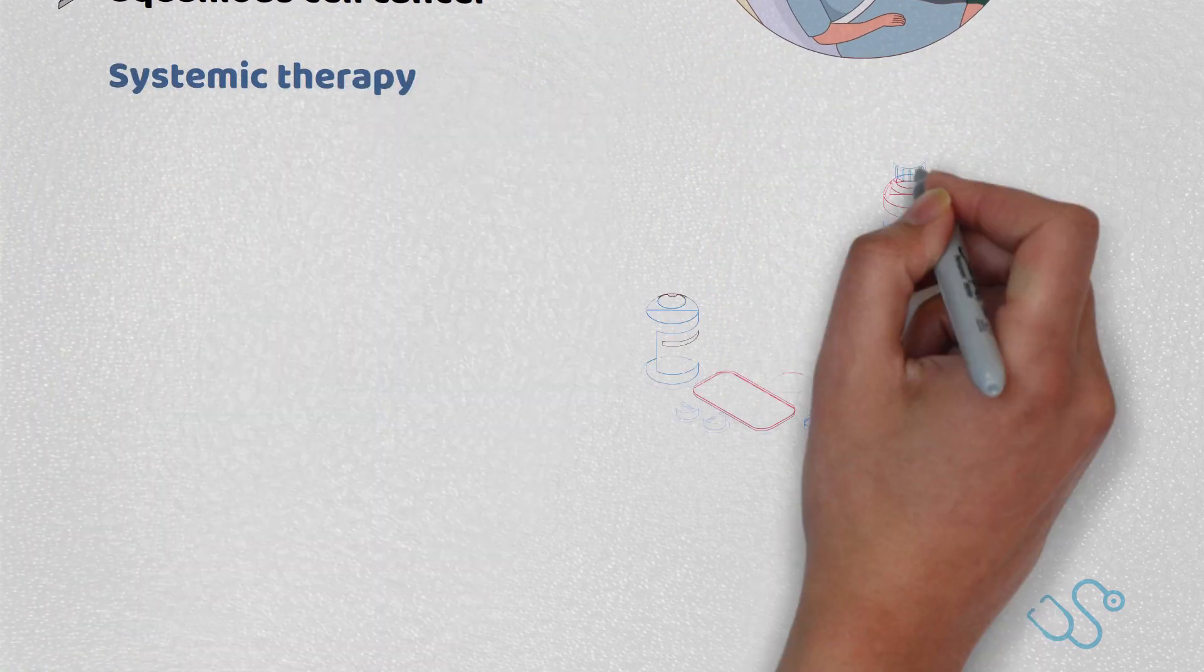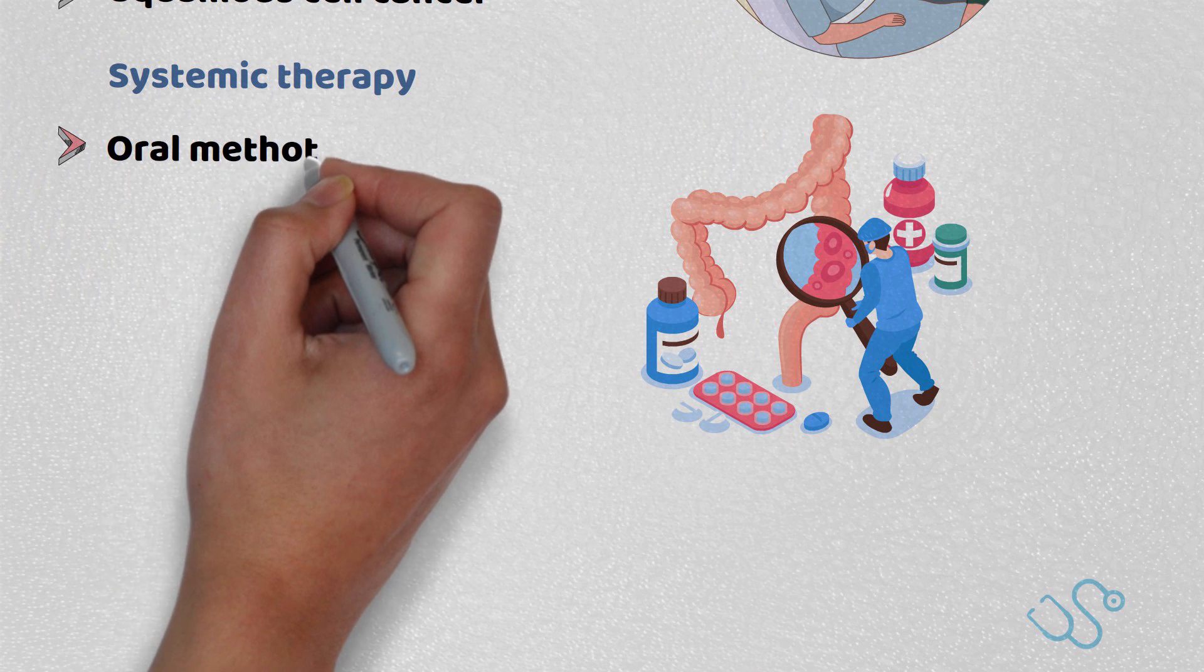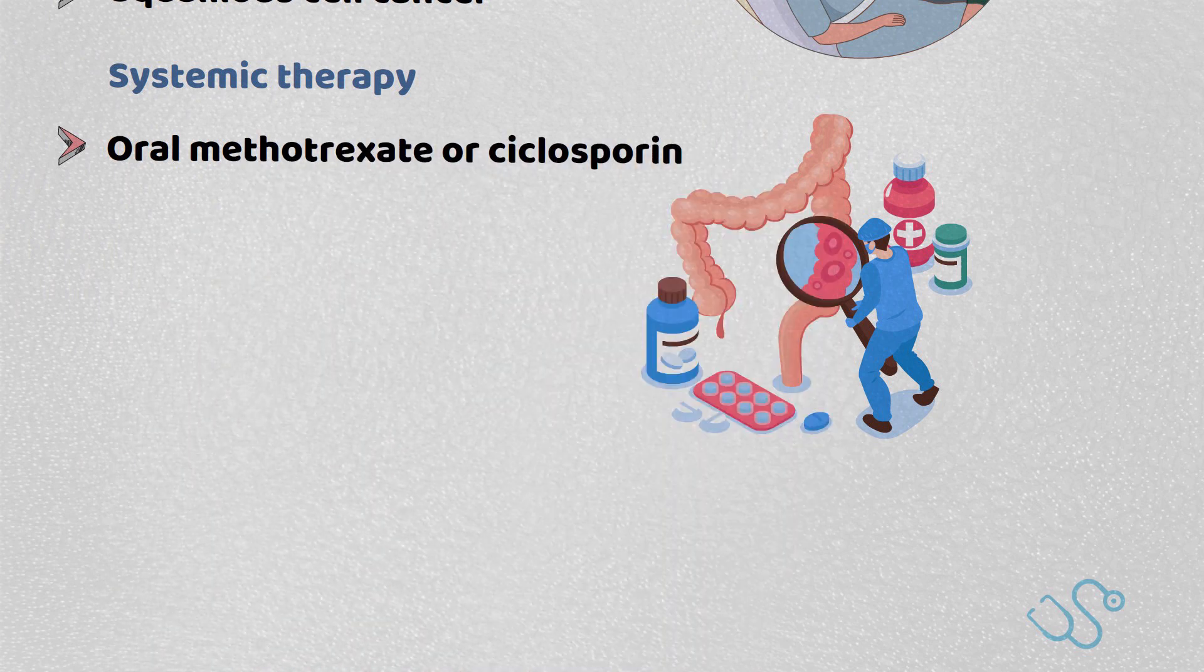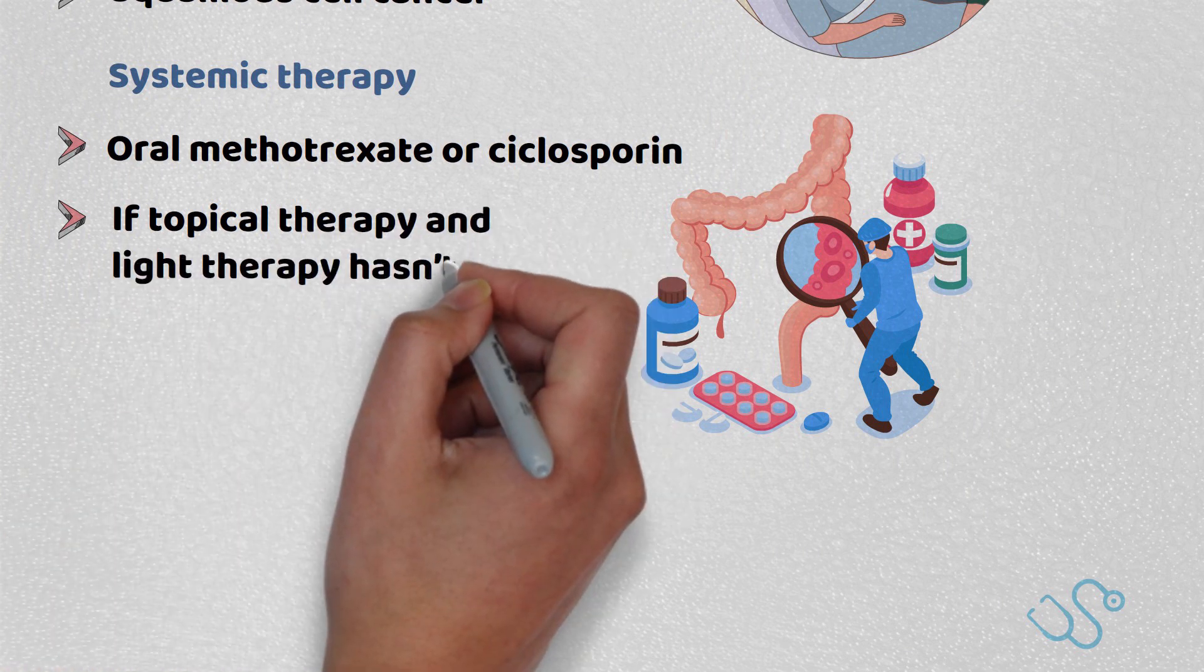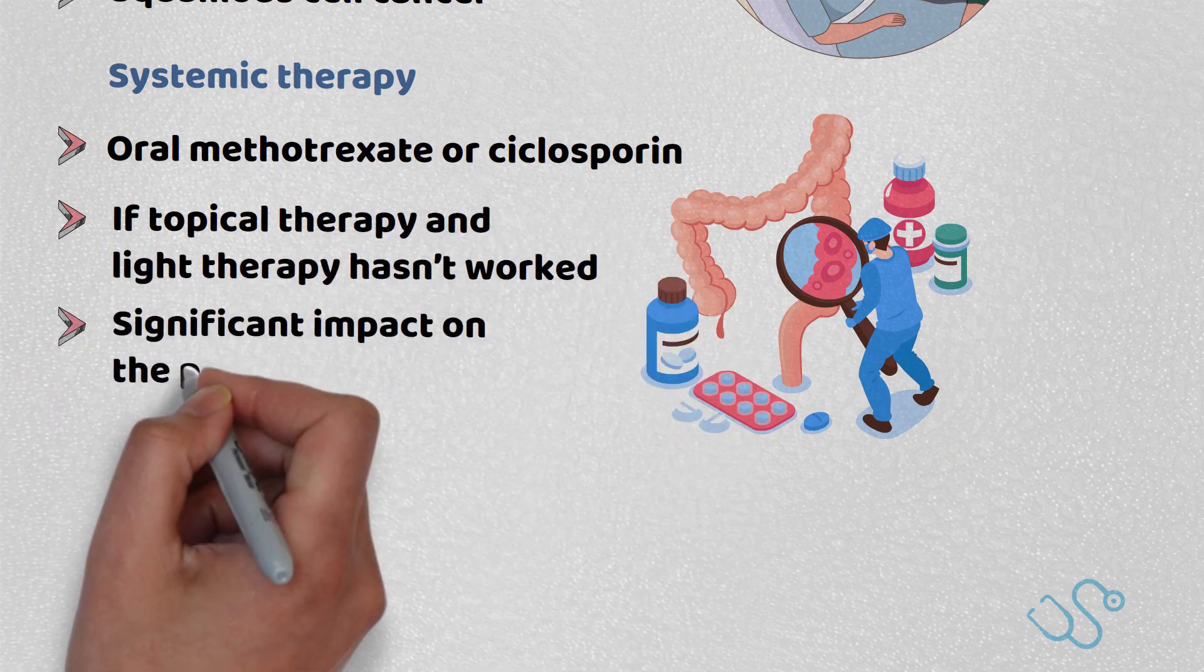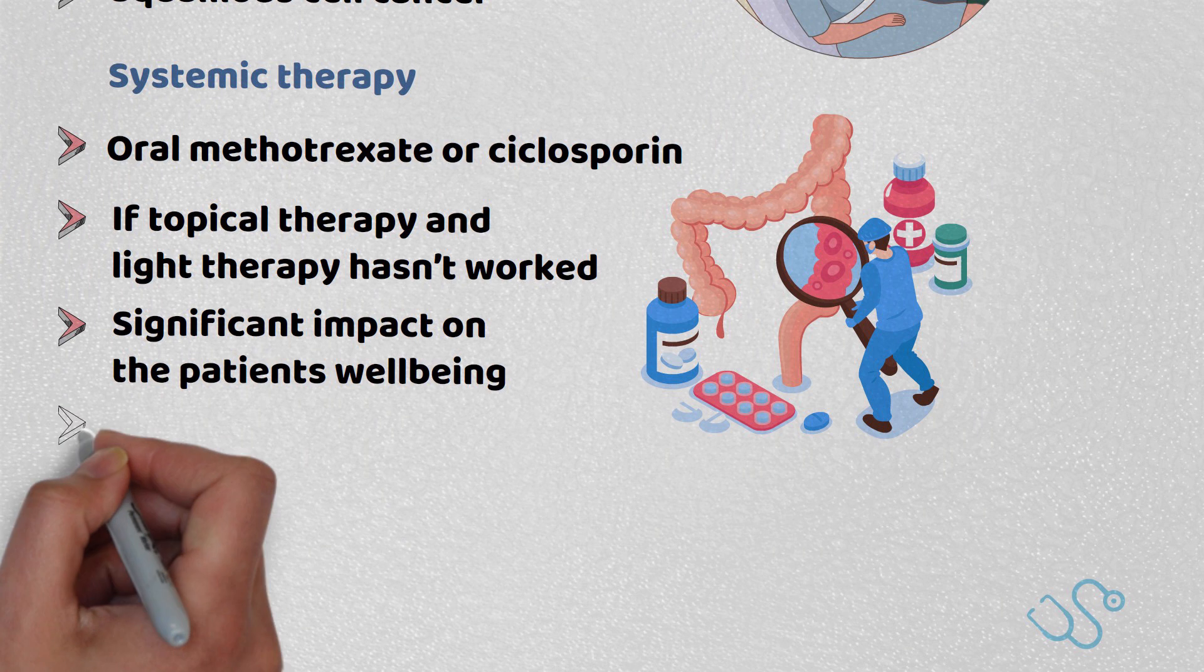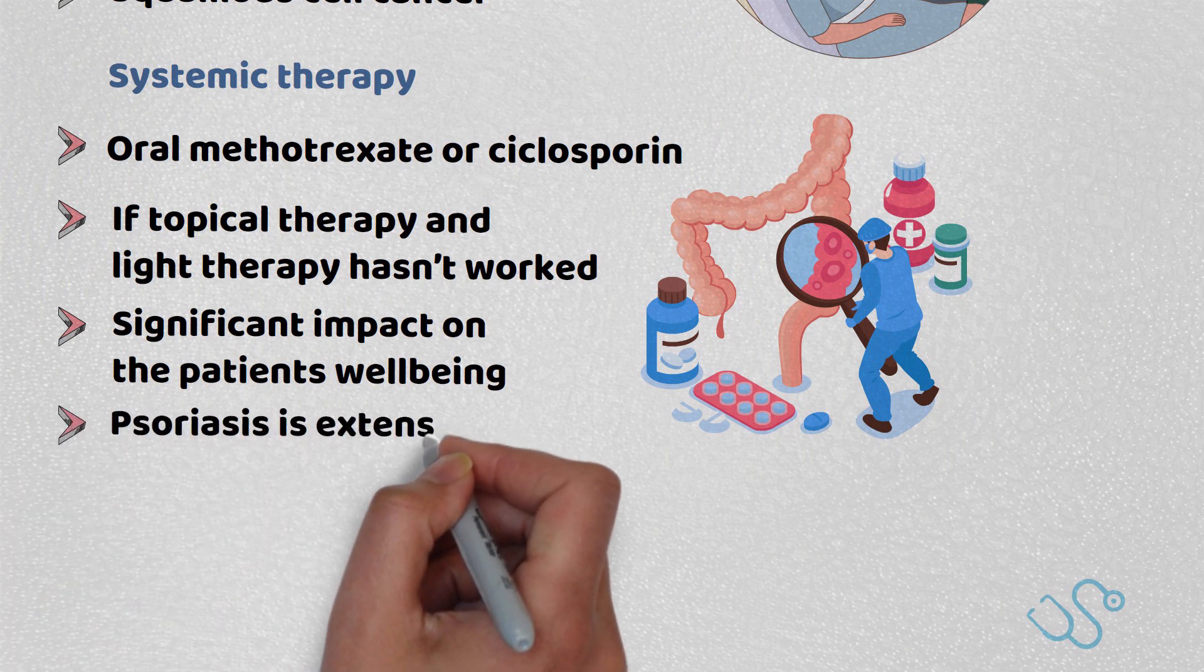Systemic therapy may also be considered, usually methotrexate or cyclosporine. This is particularly key if topical therapy and light therapy hasn't worked, or if there's significant impact on the patient's wellbeing, or if the psoriasis is that extensive.